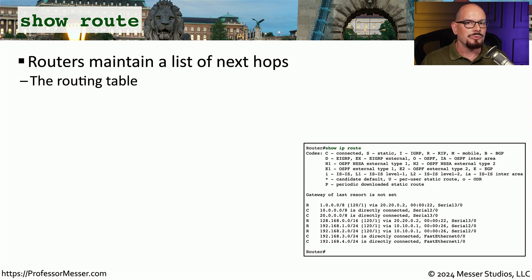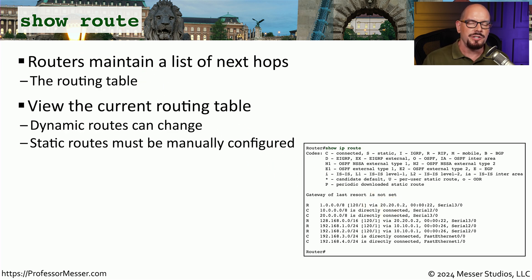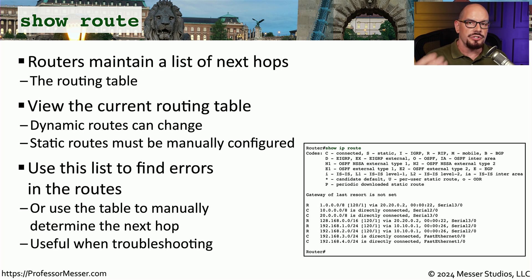We've also talked a lot about routing in this course. If you'd like to see a list of the routes inside of the routing table, you can use the show route command. This is a very useful command to see exactly where the routes are for a particular router. You can use this command on each router to build the path that traffic should take from one end of the network to the other. It's very common to use the show route command, look at the routes in the table, find the route that applies to the traffic, and then follow that traffic out the specific interface.